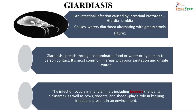The trophozoite is a morphological form which is active and motile. Giardiasis spreads through contaminated food or water and by person-to-person contact. It is most common in areas with poor sanitation and unsafe water. The infection occurs in many animals including beavers, cows, rodents, and sheep, which play a role in keeping the infection prevalent in the environment.